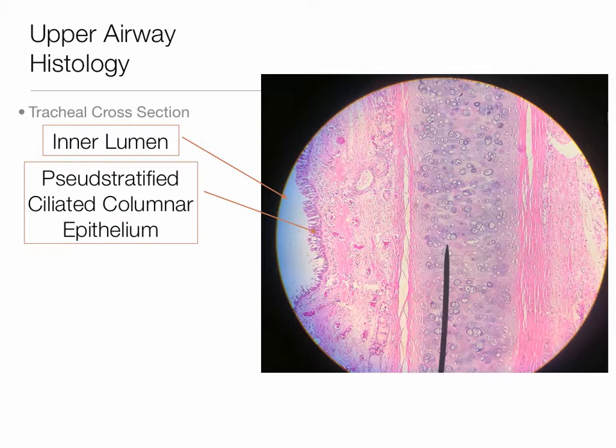These cells are involved in the mucociliary escalator, or the mucociliary transport mechanism. They have lots of cilia on them. The cilia beat very rapidly and propel the mucus layer up and out of the airway. The mucus layer is very important in trapping toxins, dust, and potential pathogens. These cilia can beat very rapidly and hopefully get that mucus out of the airways.